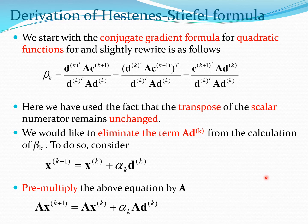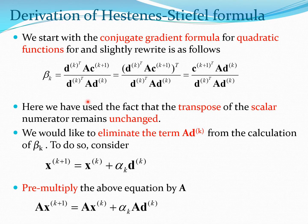We start with the conjugate gradient formula for quadratic functions. Recall from the last lecture this is the formula in terms of beta_k, and now we are going to try to get rid of the A matrix. By getting rid of the A matrix we simplify these methods and make them more general, because if you do not have a quadratic function then the A matrix will not be there, but you will still have the D and C vectors. We try to vectorize these methods instead of having matrices floating around.